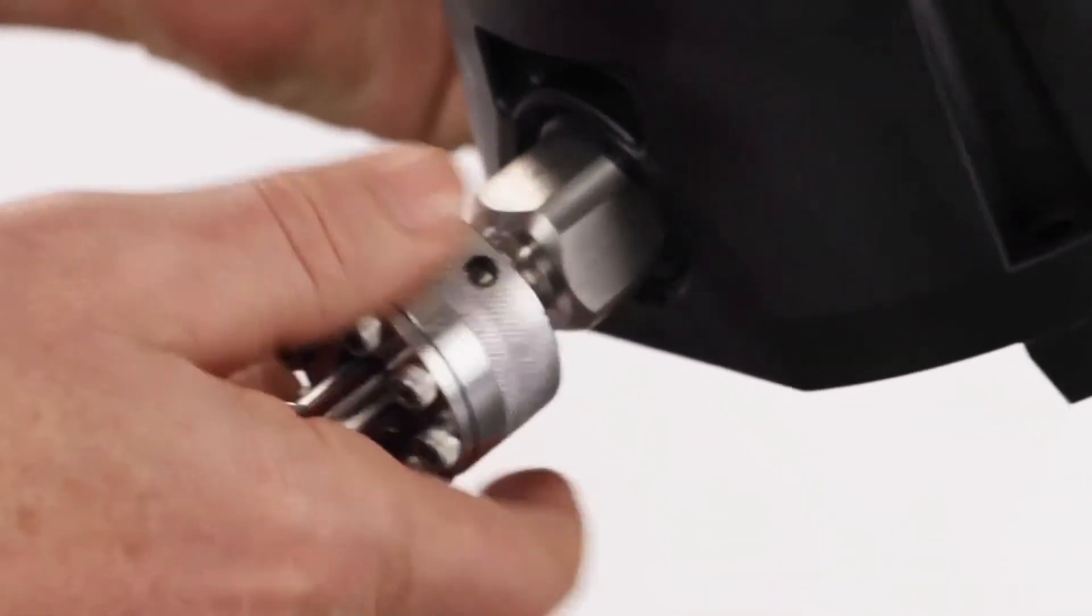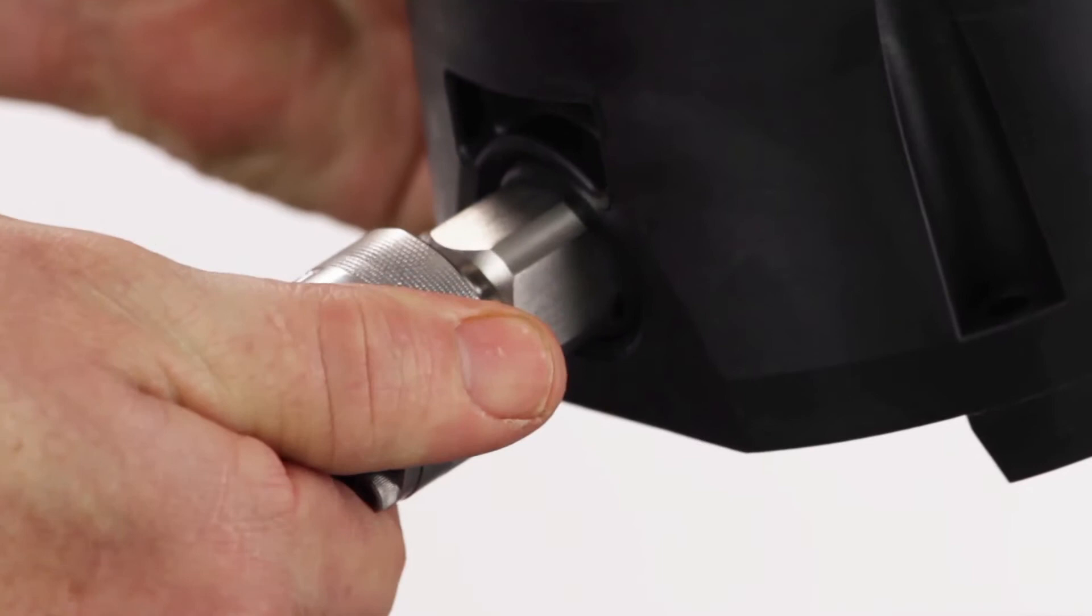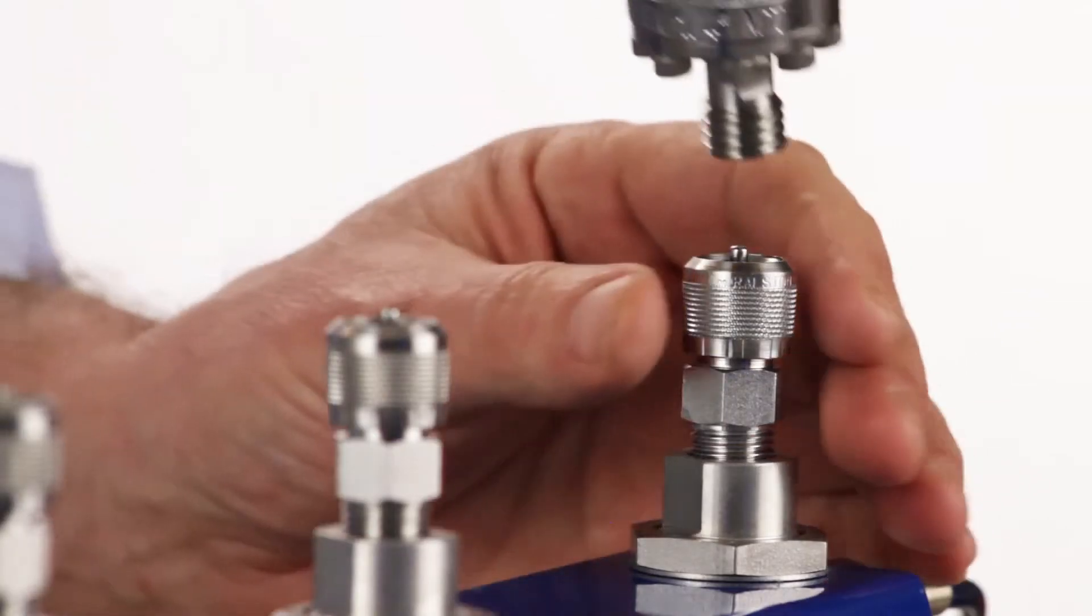You can quickly connect a pressure gauge or other pressure device to it finger tight thanks to our unique pressure-actuated o-ring seal.